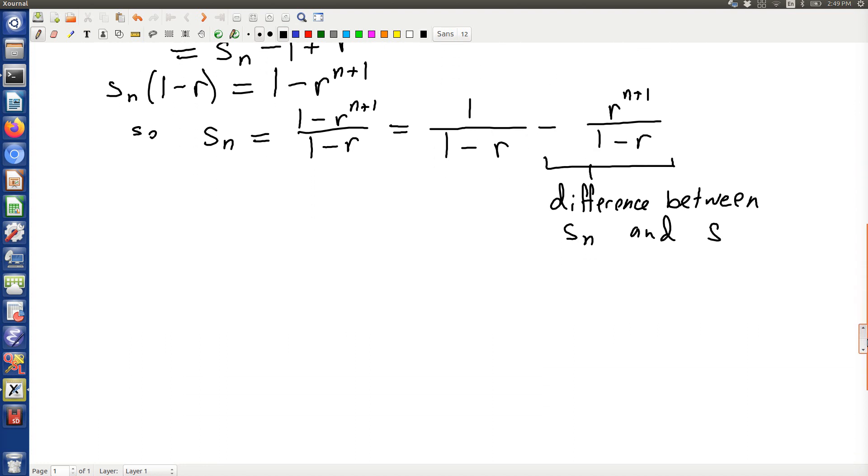And so the question of course is, what happens as n goes to infinity? So that's supposedly S, should it exist. And it's really entirely dependent on that term going to 0.